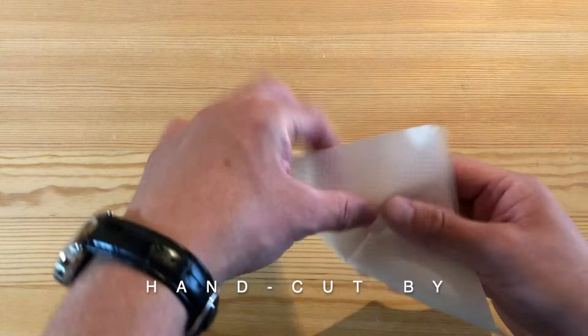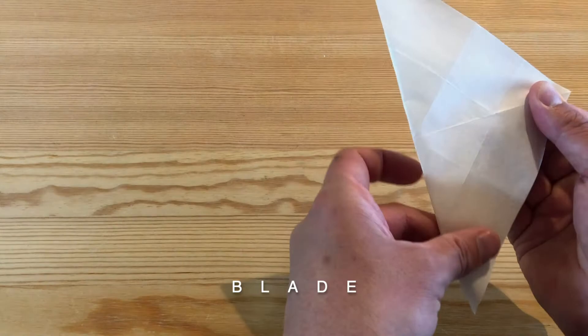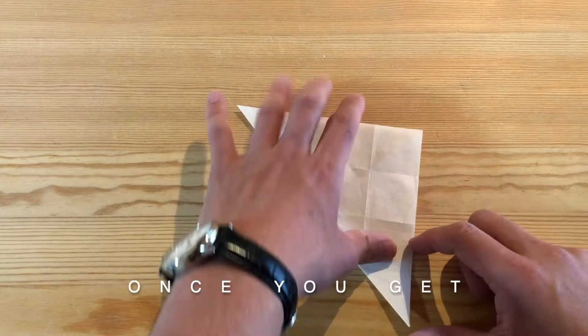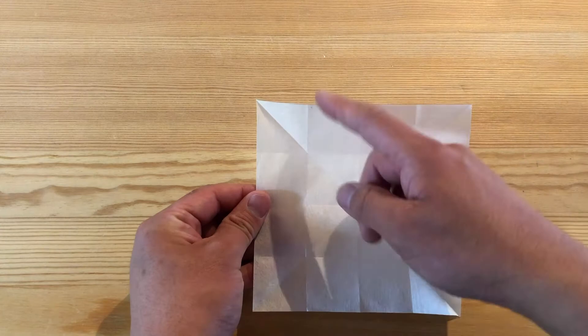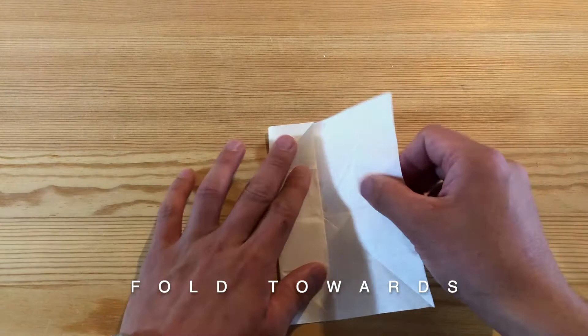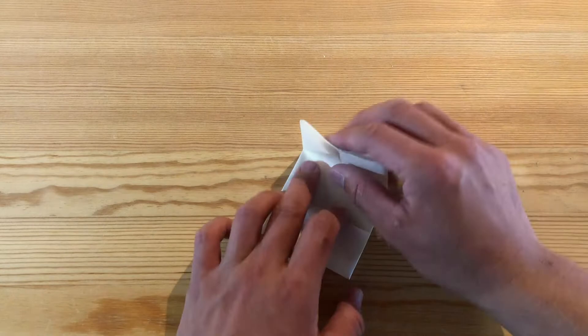This paper is hand cut by blade. Once you get half and half, open it up. Then fold towards inside, towards the middle.